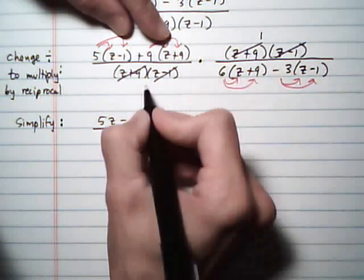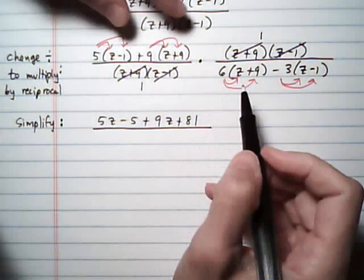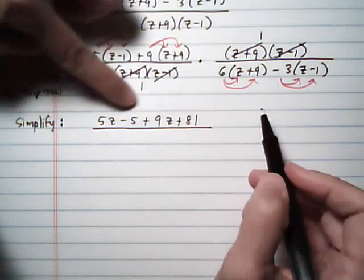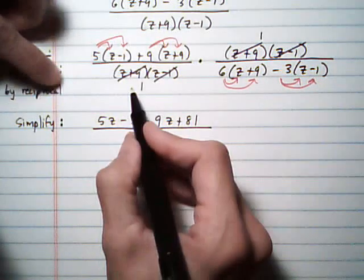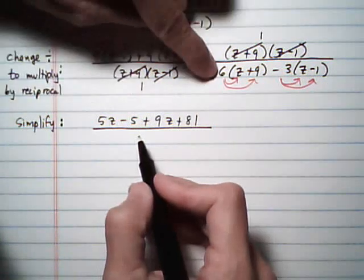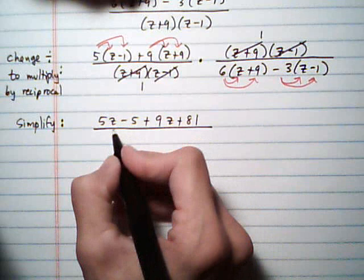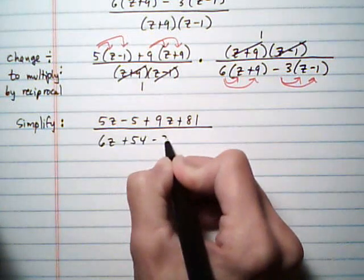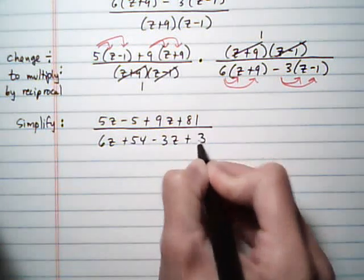And a one down here. So already I'm using the idea that multiplying fractions, you multiply right across the top. So we have this top times one. And multiply all the way across the bottom for the denominator. So it would be one times this stuff right here, which I'm going to distribute. 6z plus 54 minus 3z plus 3.